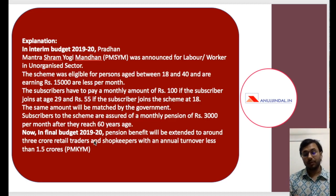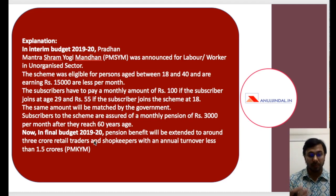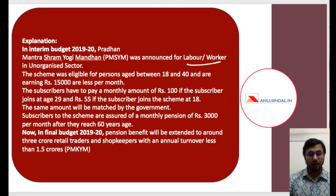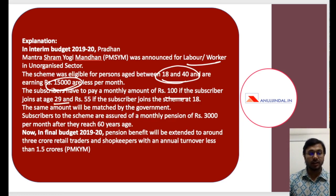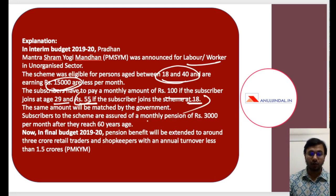Shram Yogi Mandhan and Karam Yogi Mandhan both have very similar objectives; the only difference is the category of people each one targets. About Shram Yogi Mandhan: it was launched for workers in the unorganized sector, with eligibility of 18 to 40 years and an income limit of Rs 15,000 or less per month. You pay Rs 55 per month if you join at age 18, or Rs 100 per month if you join at age 29. Monthly pension is Rs 3,000 per month after you reach 60 years of age.